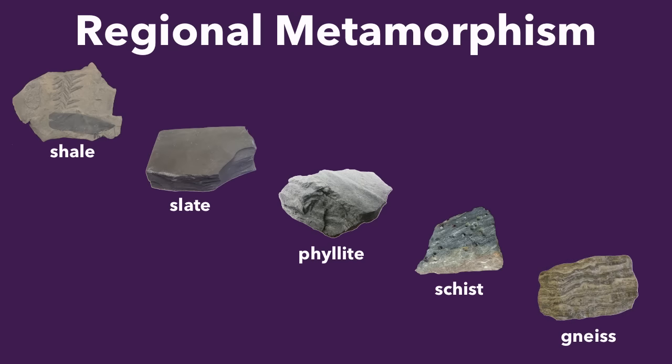Let's take a look at a typical progression of metamorphism that occurs. Starting with the sedimentary rock shale — if you add heat and pressure, it will metamorphosize to slate. If you add more heat and pressure, it will become phyllite; more, and it will become schist; even more, and it will become the metamorphic rock gneiss. Take a look at that gneiss sample down there — you'll notice it has bands of minerals, which is a result of the intense, intense pressure. If you were to take gneiss and add additional heat and pressure, it would likely melt into magma or lava and then become an igneous rock. So gneiss is generally the extent of metamorphism that we see.